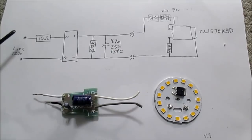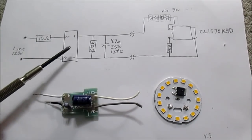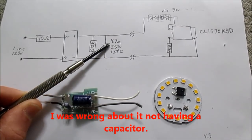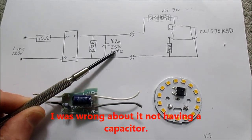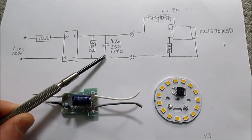So here is the schematic. 120 volts AC comes in here. Goes through a fusible 10 ohm resistor. Full wave bridge. 4.7 microfarad cap rated 250 volts, 130 degrees Celsius. That's good to see a high value like that.